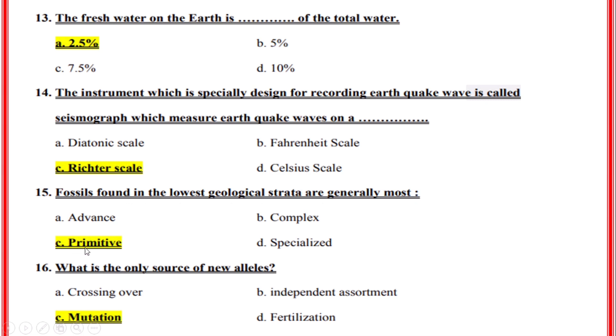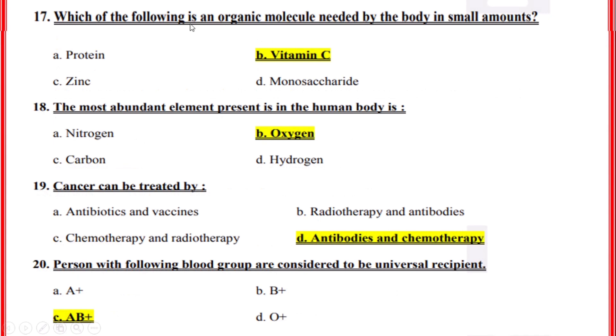What is the only source of new alleles? Correct option: C, Mutation. Which of the following is an organic molecule needed by the body in small amounts? Correct option: B, Vitamin. The most abundant element present in the human body is? Correct option: B, Oxygen.